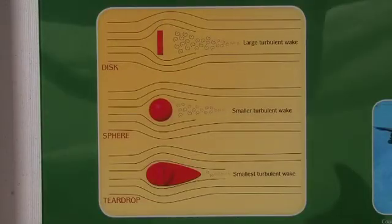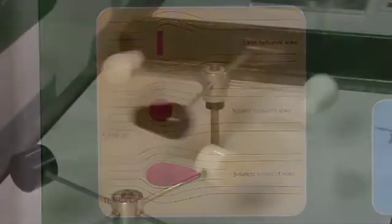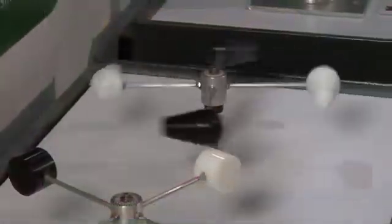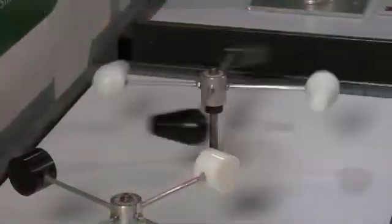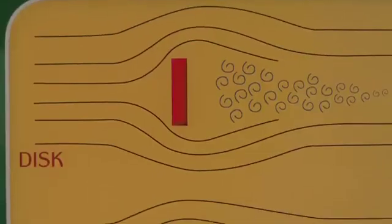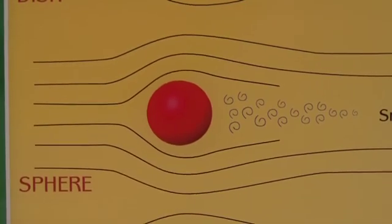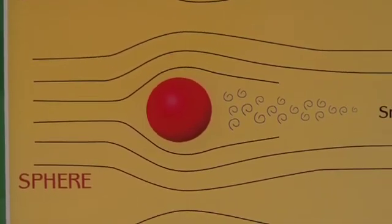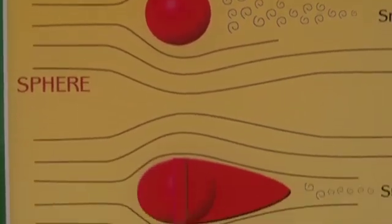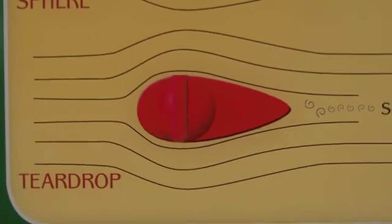And because of that, it's going to have the smallest turbulent wake. The teardrop shape is the most aerodynamic of all three shapes. Now, why do we want a small turbulent wake? The smaller the turbulent wake, the smaller the pressure difference between the front side of the object and the back side of the object. And now you're familiar with two types of drag that affect how things fly.